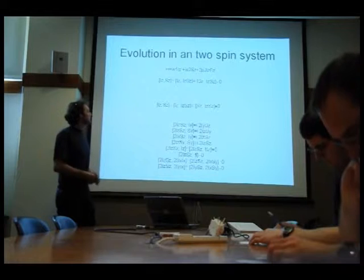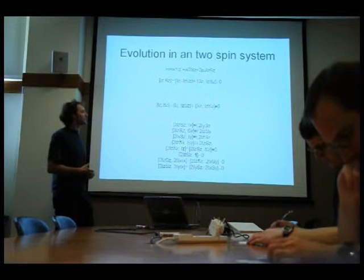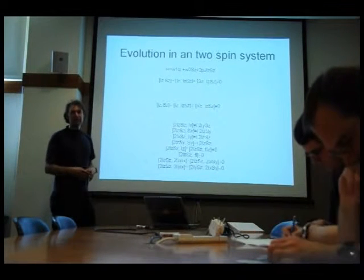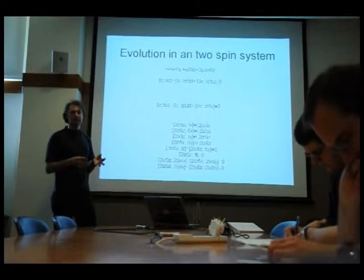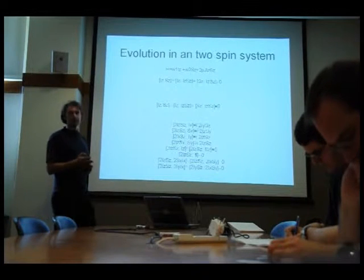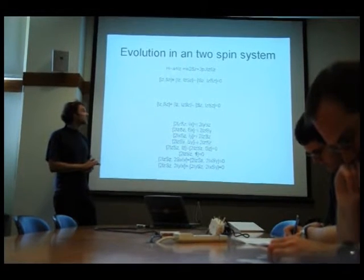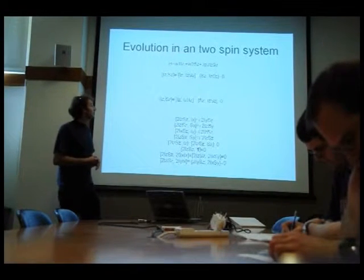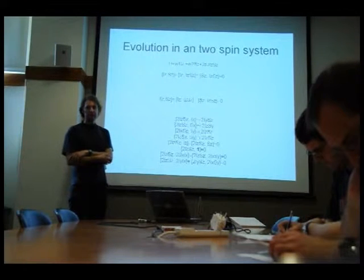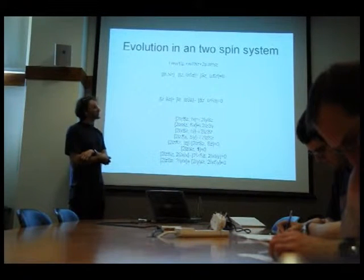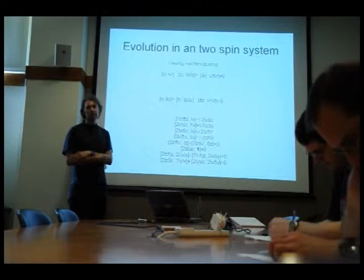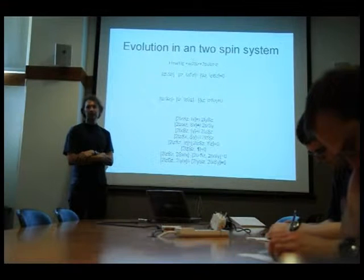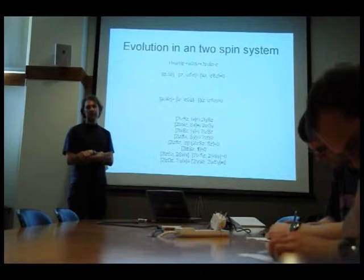And IC, IC. Right, and of course, this Hamiltonian now, if we plug it into the Schrodinger equation, or if we take this form of the time-dependent density matrix, things become a little bit more complicated to evaluate, but still, there are very useful commutation relationships that will allow us to easily evaluate the time evolution without having to use a computer to calculate it in some cases.